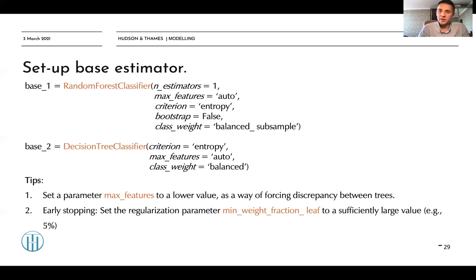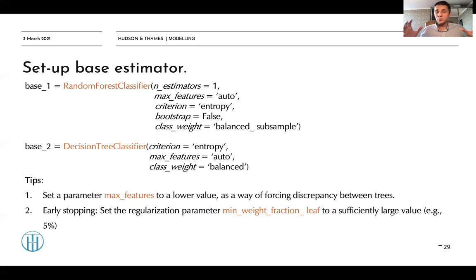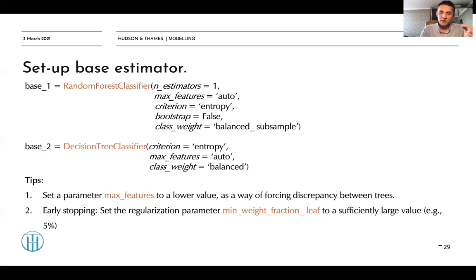Several pro tips for setting up a machine learning model: First, set max_features to a relatively low value to force discrepancy between trees. For example, setting max_features to 1 in a bagging classifier trains many decision trees each using only one feature, making the universe of classifiers highly diverse and helping to tackle overfitting. You can also use the regularization parameter min_weight_fraction_leaf present in decision trees, setting it to a relatively high value such as 5%.